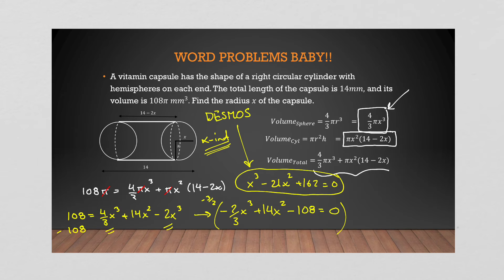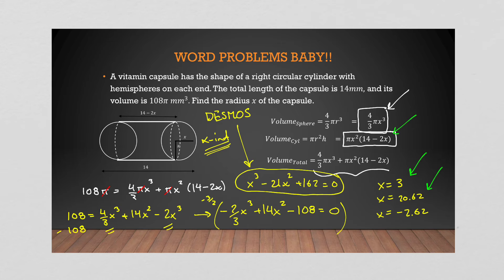When you plug it into Desmos, you'll see it crosses three times: x = 3, x ≈ 20.62, and x ≈ −2.62. Now consider what these mean — x is the radius. Three millimeters for a radius sounds reasonable. Twenty millimeters: if you plug that into (14 − 2x) you get a negative value, so reject it. Negative 2.62: can't have a negative radius, reject that too. The only valid root is x = 3 — radius is 3 mm.